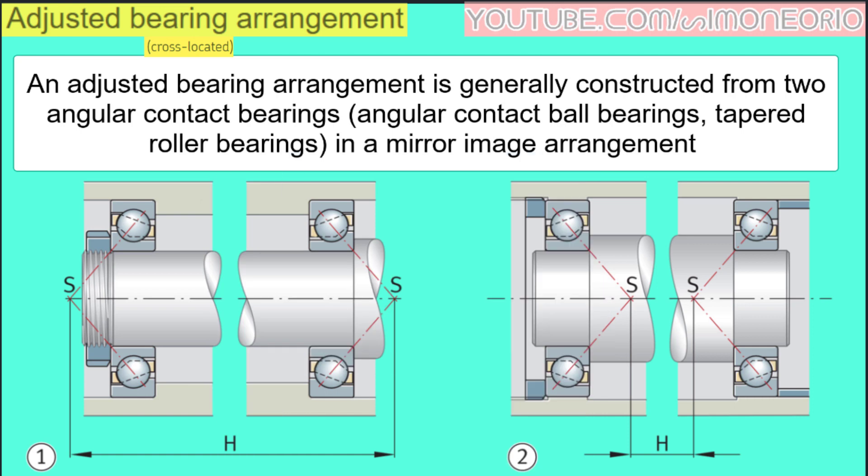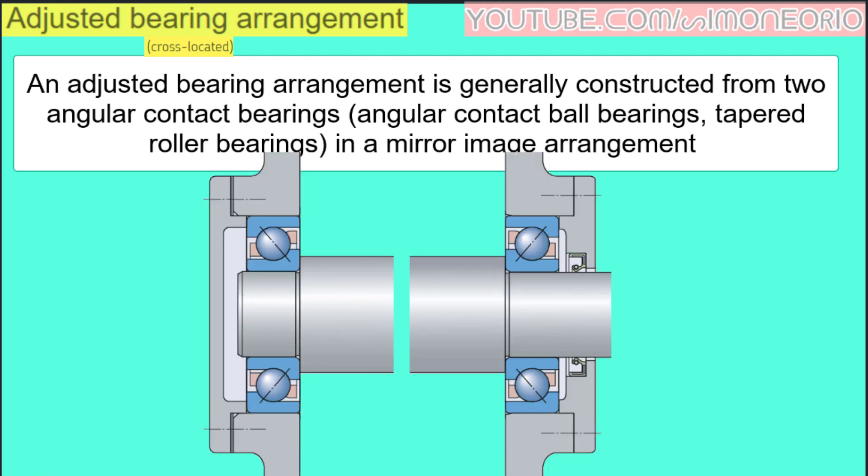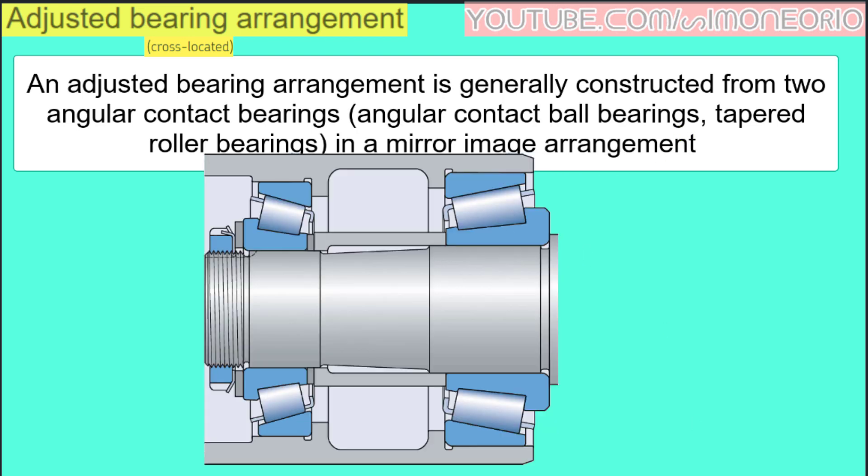An Adjusted Bearing Arrangement is generally constructed from two Angular Contact Bearings. Here we have Angular Contact Ball Bearing, and here we have Tapered Roller Bearing, and these bearings are in a Mirror Image Arrangement.